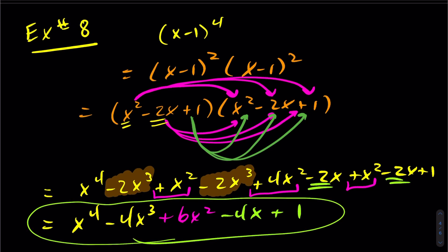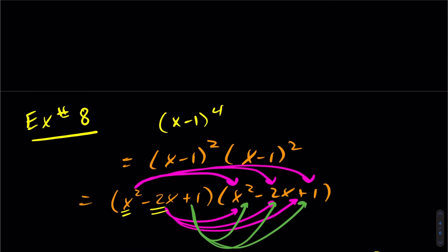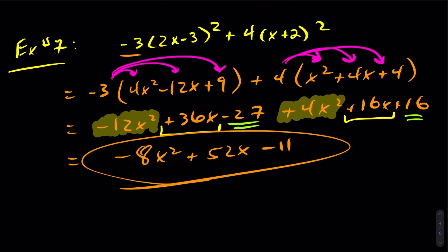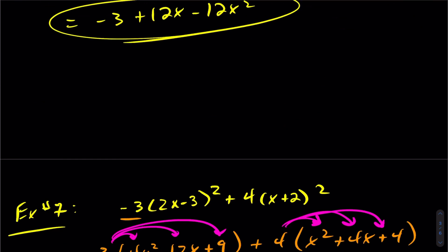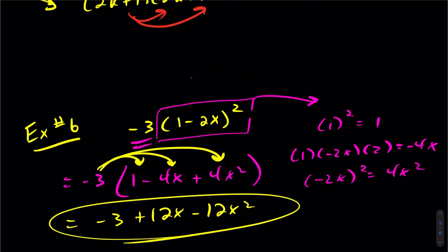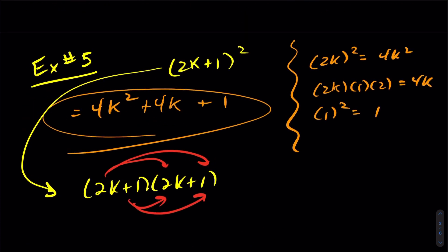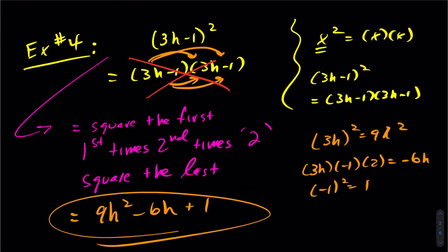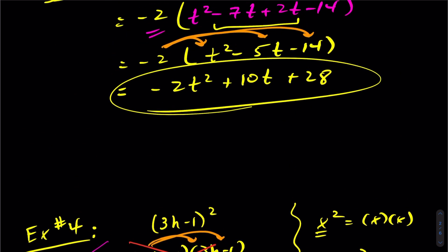That concludes expanding binomials. We just touched on it briefly, but this will give you enough technique to tackle many more questions. Pay special attention to the shortcut form: square the first, first times second times 2, square the last — it's a great way to expand binomials efficiently and quickly, and the more you practice, the faster you'll get.